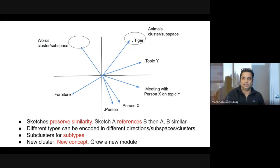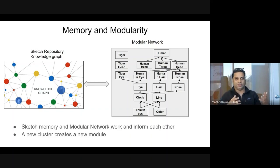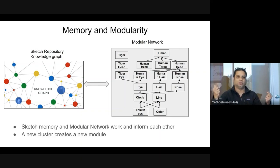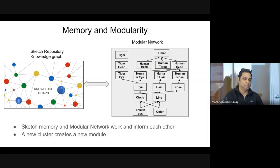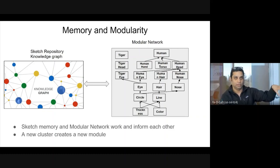You can take all the sketches accumulated over your lifetime and create a sketch repository that forms a knowledge graph. Each sketch points to other sketches based on similarity or reference. This knowledge graph and sketch repository interacts with the modular network — when meeting a person for coffee again, the modular network retrieves related sketches from the knowledge graph, which retrieves the previous meeting's sketch and related information.